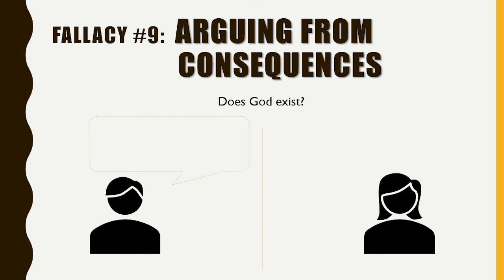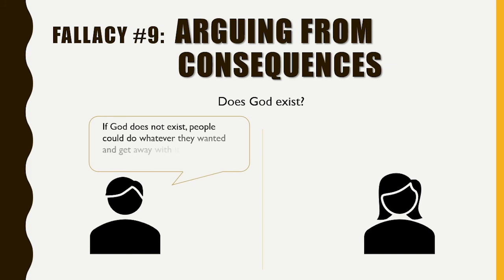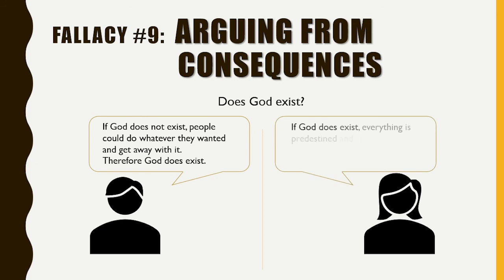Example number one: if God does not exist, people could do whatever they wanted and get away with it, therefore God does exist. Example number two: if God does exist, everything is predestined and I can't choose my own destiny, therefore God does not exist.